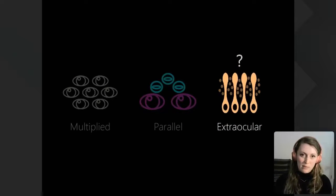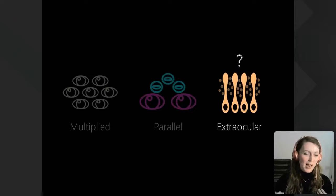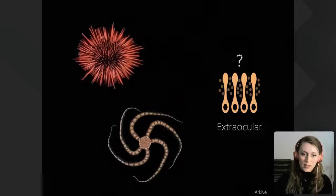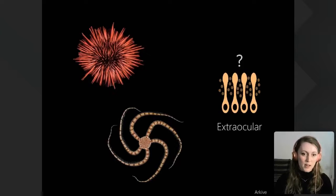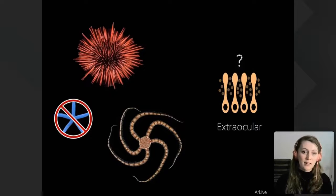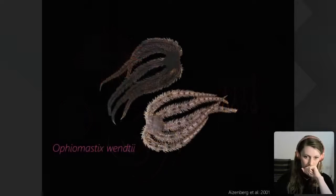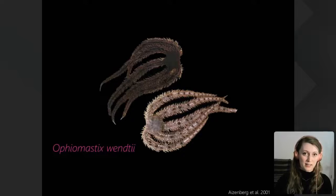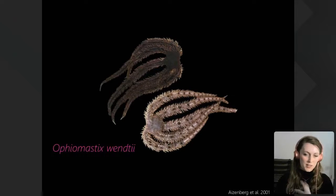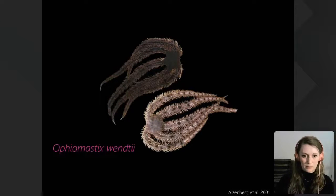Finally, I want to talk briefly about extraocular visual systems — still quite mysterious. These are systems where animals don't appear to have eyes, discrete focusing organs, or anything we would call an eye. This has mainly been studied in sea urchins and brittle stars — relatives of starfish but without starfish's compound eyes. One species, Ophiomastix, became the poster child for extraocular vision: it is very light sensitive, performs a beautiful colour-changing trick between day and night, and will crawl away into any crevice when exposed to light.